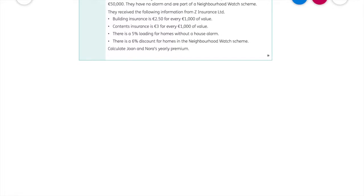Now I was going to give the example question given at the top here. This is an example for home insurance. So Joan and Nora Kennedy want to insure their house for £250,000 and its contents for £50,000. They have no alarm and are part of a neighborhood watch scheme. So that's a bit of information they're giving us about the people.